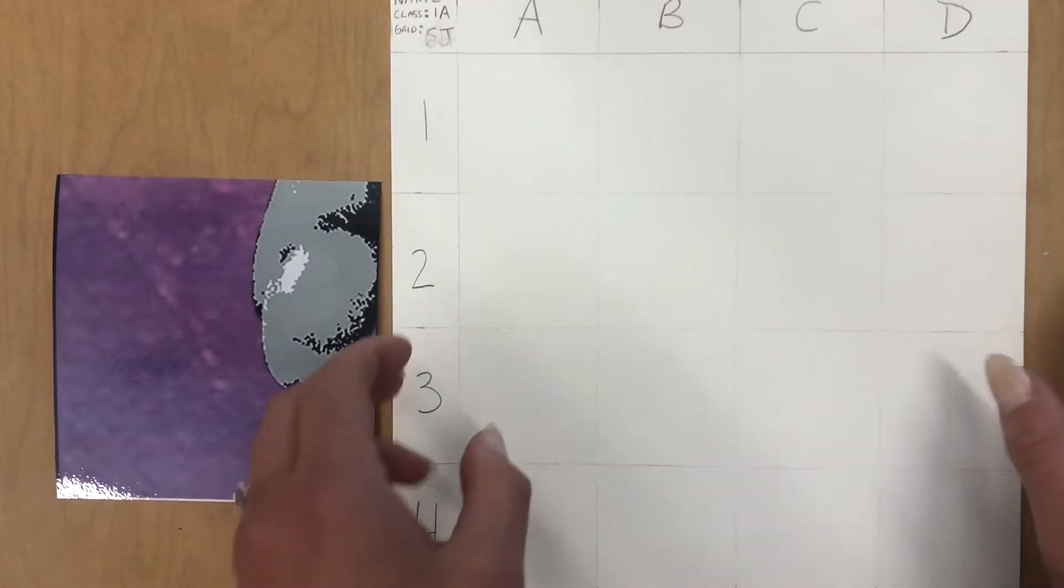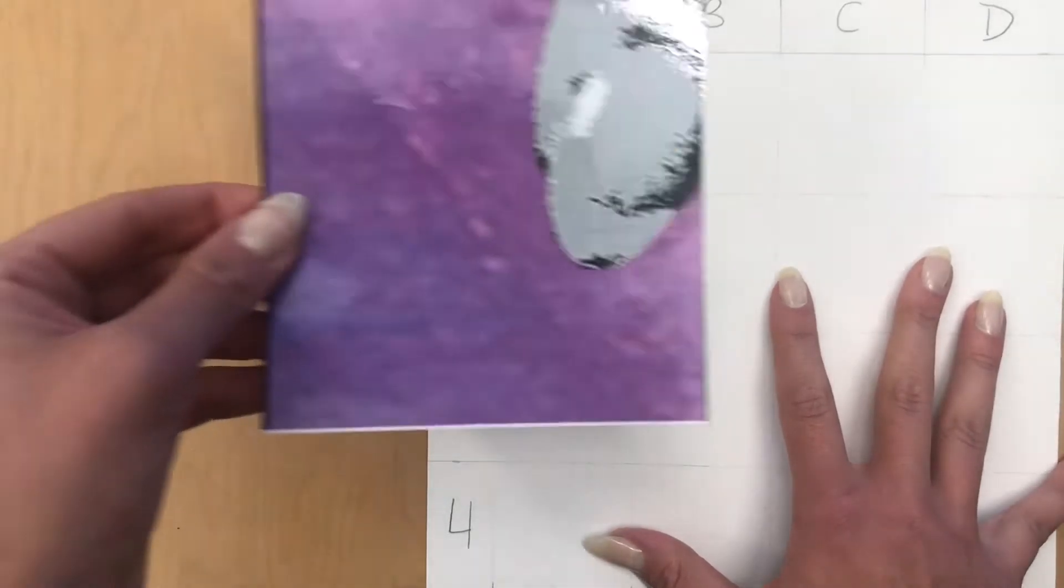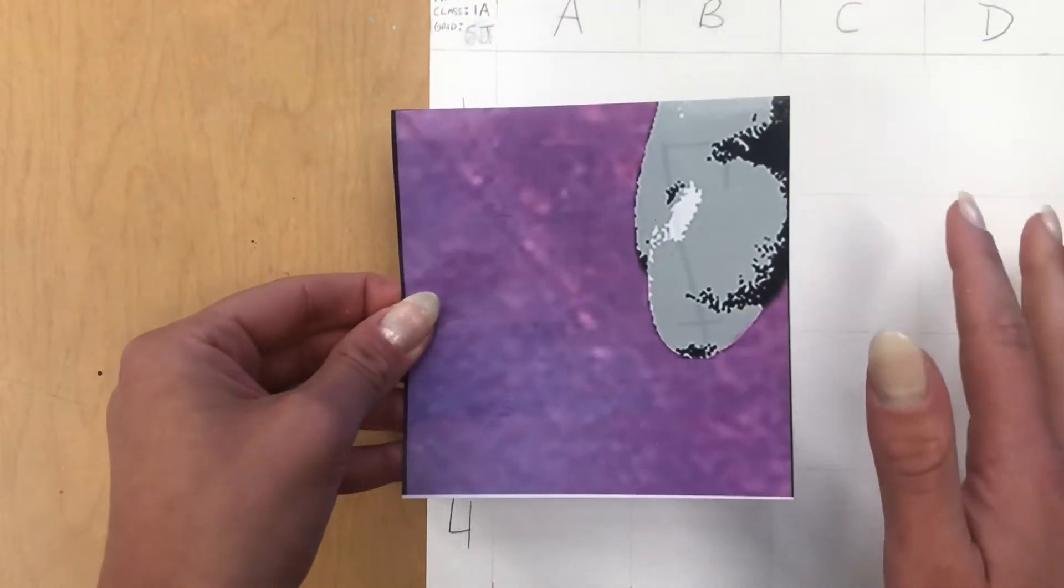After you've gridded your watercolor paper, you're going to do the same thing to this block.